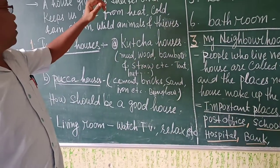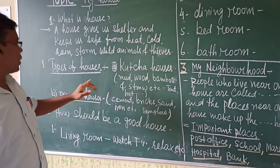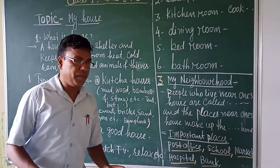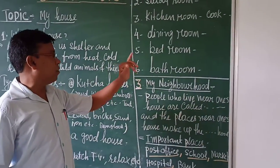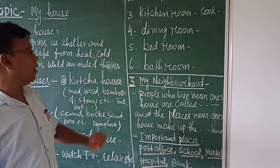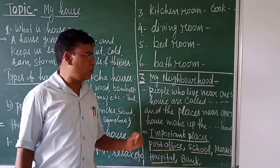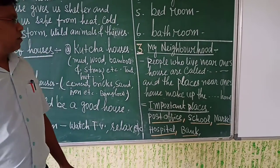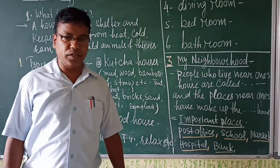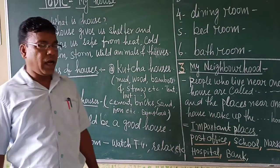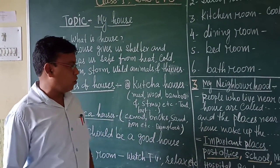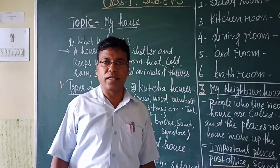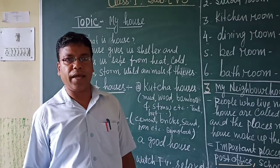Today I told you about my house and the types of houses. A good house should have many rooms like the living room, study room, kitchen room, dining room, bedroom and bathroom. And at last we learned about our neighborhood. I am sure you understood the topic I wanted to convey. So here I stop my class. Okay students, bye bye.